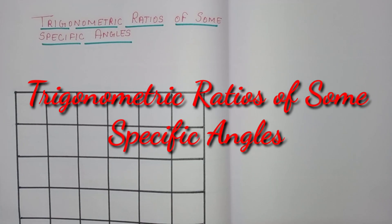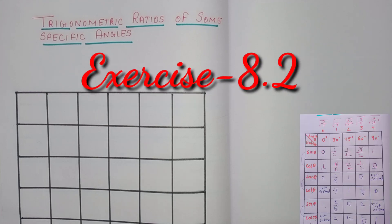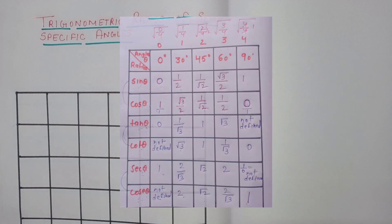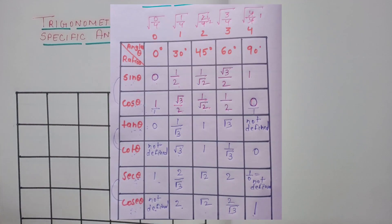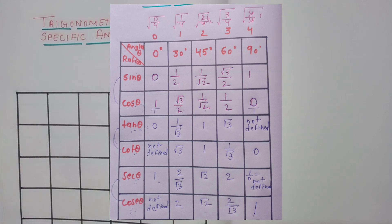Trigonometric Ratios of Some Specific Angles, Part 3: the Trigonometric Table, which we will use for Exercise 8.2. Whatever questions we solve in 8.2, we will use this trigonometric table. We will see the trick of the trigonometric table. The table helps find the values of trigonometric standard angles, also called specific angles.